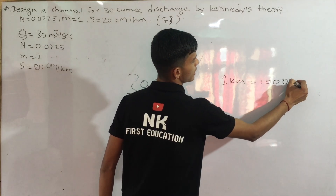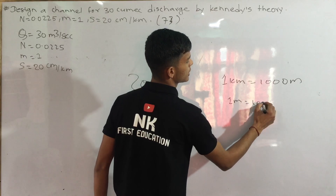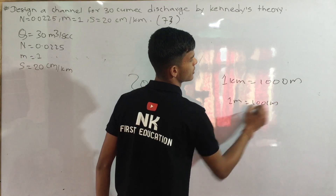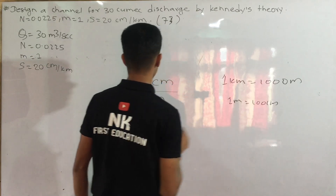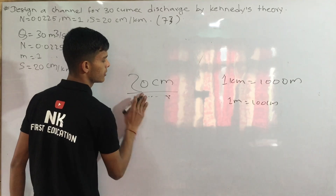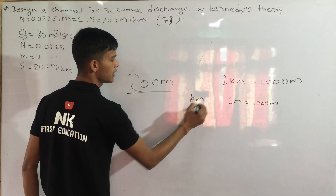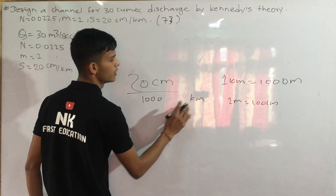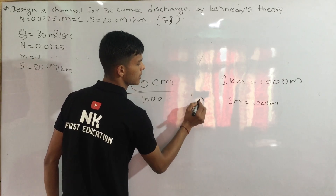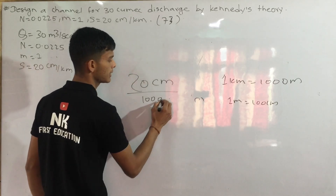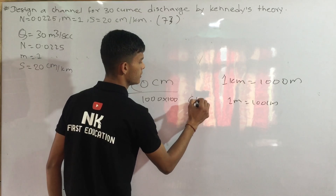It is 1,000 m. It is 1 m per hour. It is 120 m. It is 1 km. It is 1,000 cm. In 1,000 m, it is 1,000 m.